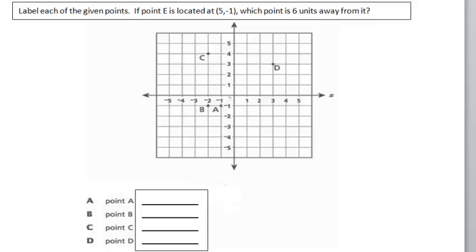Point A is located at negative 1, negative 1. Point B is located at negative 2, negative 1. Point C is located at negative 2, positive 4. Point D is located at positive 3, positive 3. This completes the first part of my question.